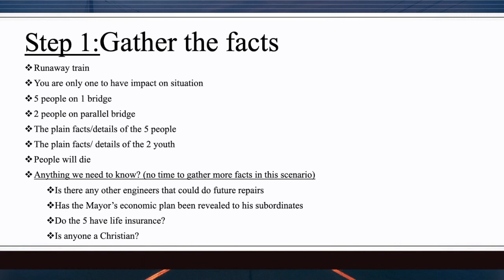Now, what do we need to know? There's no time to really gather more facts because the train is coming — you have to make a decision. Usually you'll have time to gather more facts in an ethical dilemma. Some things we'd like to know: Is there any other engineer who could do future repairs? Has the mayor's economic plan been revealed to anyone else, like his subordinates? Do the five men have life insurance? Is anyone a Christian on the bridge?